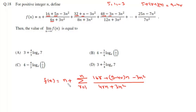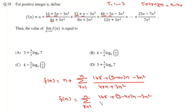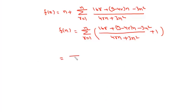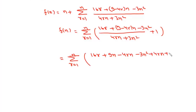Now since we have n, we write it as 1 plus 1 plus 1 n times. So we write f(n) as this summation where r varies from 1 to n, and we take this 1 with each summation, so it will be 16r plus 9 minus 4r·n minus 3n² upon 4rn plus 3n² plus 1. We then write 4rn plus 3n² upon 4rn plus 3n².